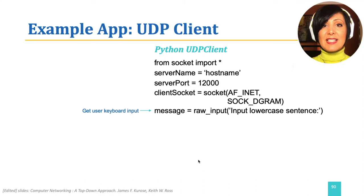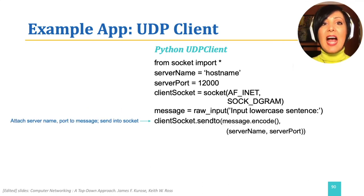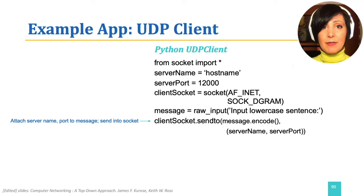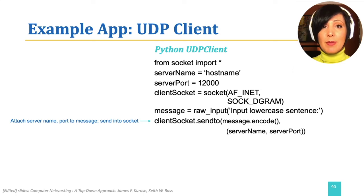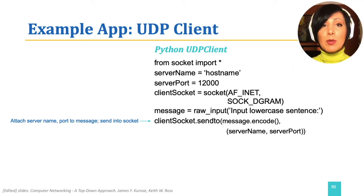The next step is to send the message received from the user out the socket and towards the server port. Note that the server port is the saved variable defined above, holding the value of 12,000. The server name is also the value defined above.